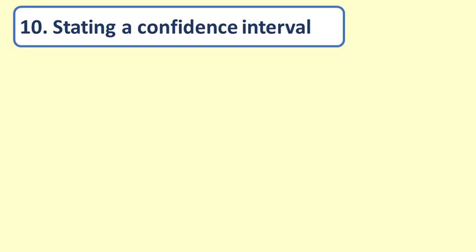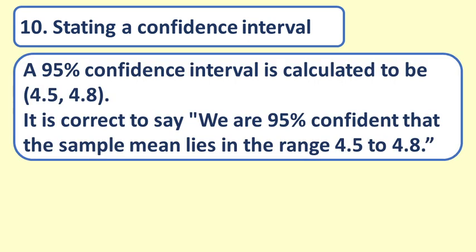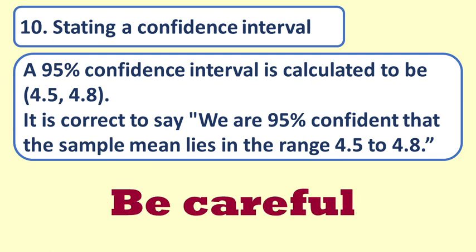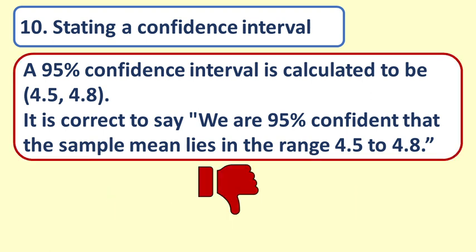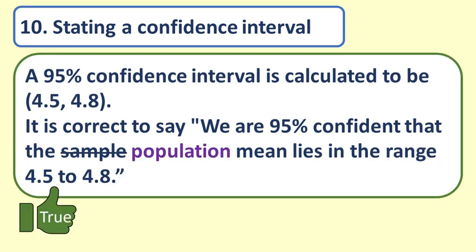Question 10: Stating a confidence interval. A 95% confidence interval is calculated to be 4.5 to 4.8. It is correct to say: we are 95% confident that the sample mean lies in the range 4.5 to 4.8. False. Confidence intervals are always about population parameters. We know what the sample mean is, and we use it to construct a confidence interval for the population mean. The correct statement is: we are 95% confident that the population mean lies in the range 4.5 to 4.8.